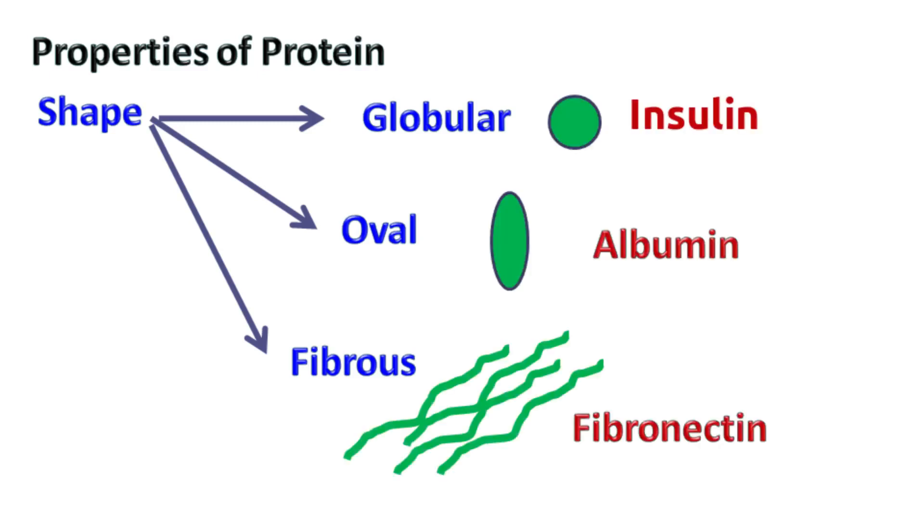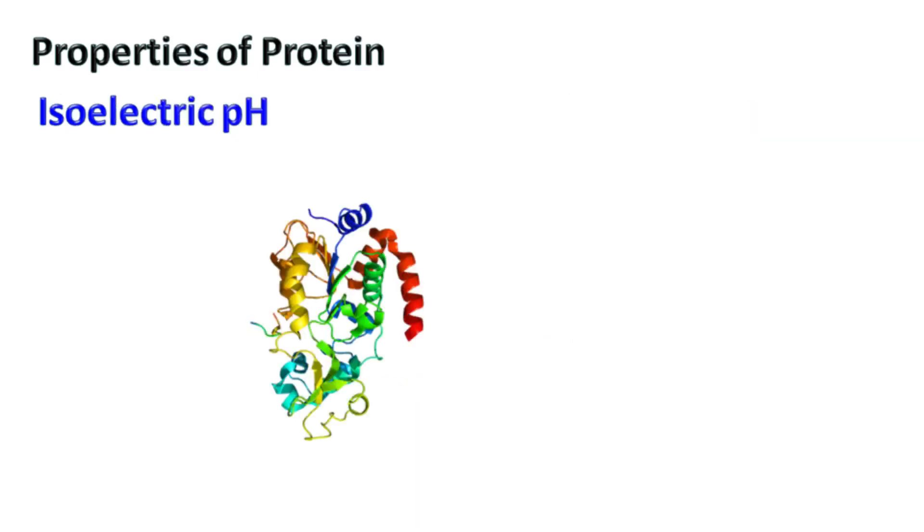Isoelectric pH: the pH at which the proteins have equal number of positive and negative charges is known as the isoelectric pH.